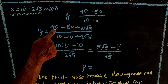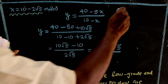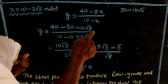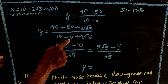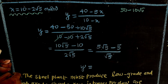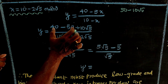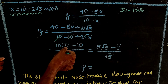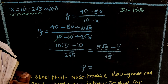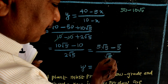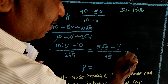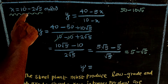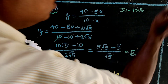Now computing y at x equals 10 minus 2√5: y equals (40 minus 5x) divided by (10 minus x). Substituting: numerator is 40 minus 5(10 minus 2√5) = 40 minus 50 plus 10√5 = minus 10 plus 10√5; denominator is 10 minus (10 minus 2√5) = 2√5. So y equals (10√5 minus 10) divided by 2√5, which simplifies to 5 minus √5.